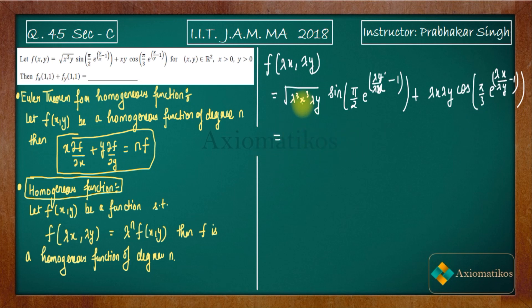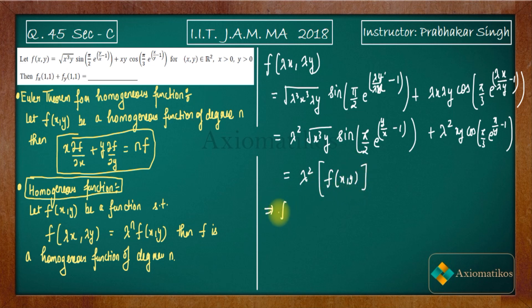You can take λ⁴ outside the square root, giving you λ². Then you get x³y·sin(π/2)·e^(y/x - 1) + xy·cos(π/3)·e^(x/y - 1). You can take λ² outside, and the remaining function is f(x,y).